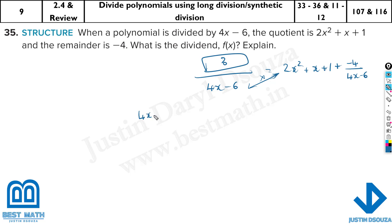It will be 4x minus 6 multiplied by 2x^2 plus x plus 1 plus minus 4 divided by 4x minus 6. Now, whenever you have remainder, what happens when you multiply? All these terms you have to multiply, but here, this cancels. So, it's basically like multiplying 4x minus 6 with 2x^2 plus x plus 1. And then, since it's minus 4, just multiply it and write minus 4. Whenever the remainders are given, just multiply the dividend and the quotient and at the end, add the remainder.